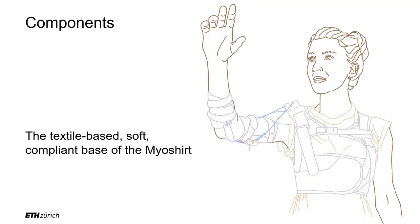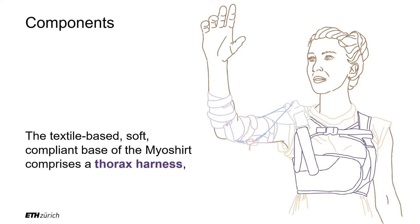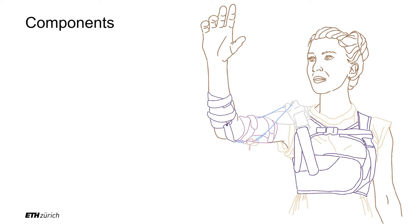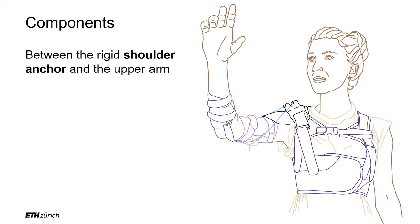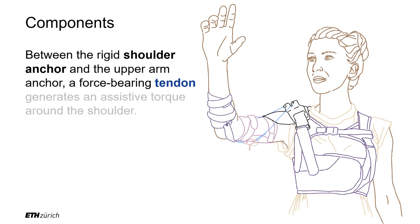The textile-based soft compliant base of the Myoshirt comprises a thorax harness, an upper arm anchor, and a forearm cuff. Between the rigid shoulder anchor and the upper arm anchor, a force-bearing tendon generates an assistive torque around the shoulder.